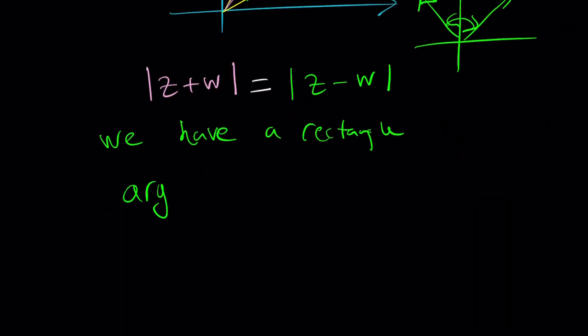You're looking at two complex numbers whose difference of arguments is equal to pi over 2. In other words, if you have a rectangle, then argument of z minus argument of w is plus or minus pi over 2, because we don't know which one is going to be subtracted from which one.